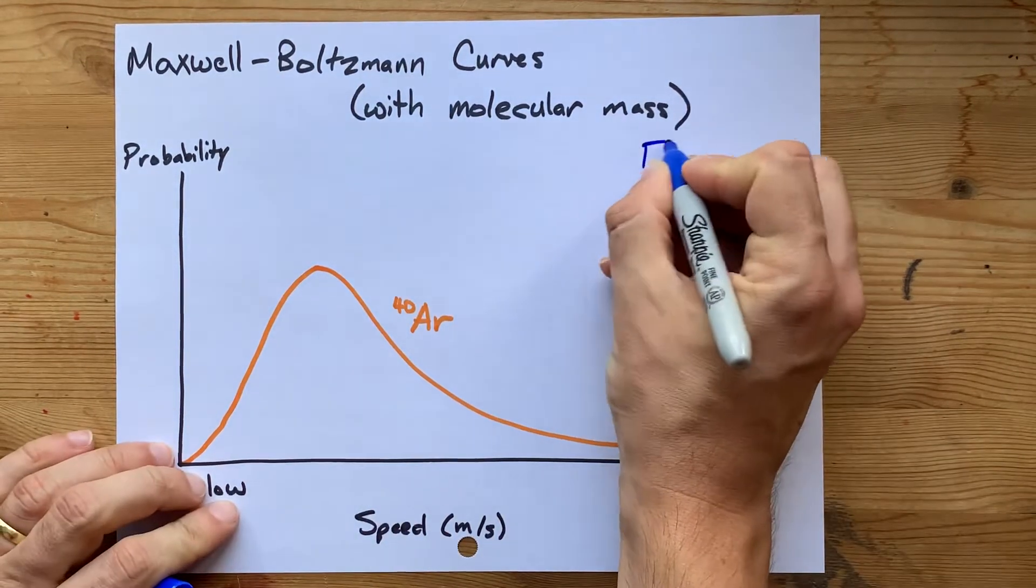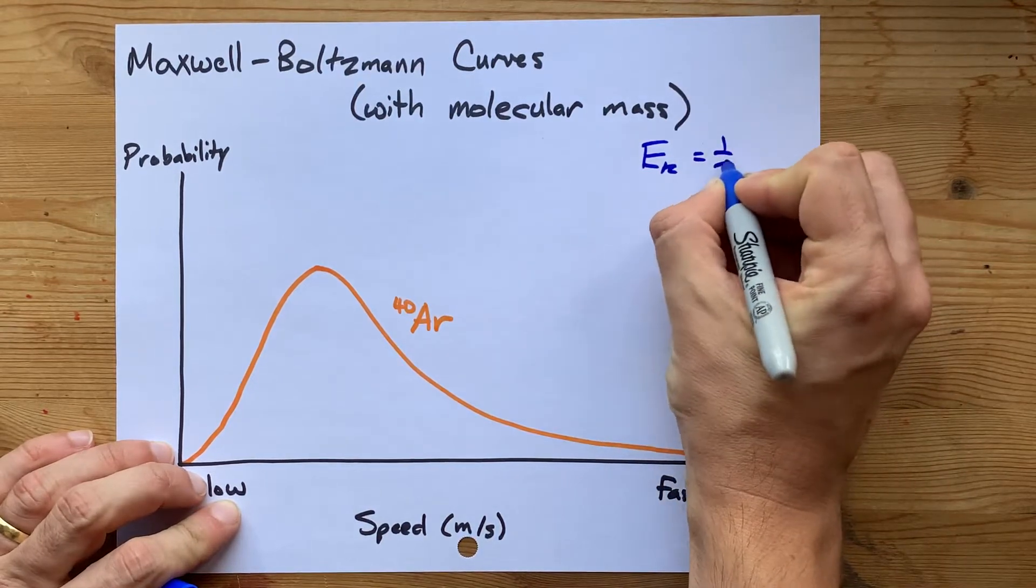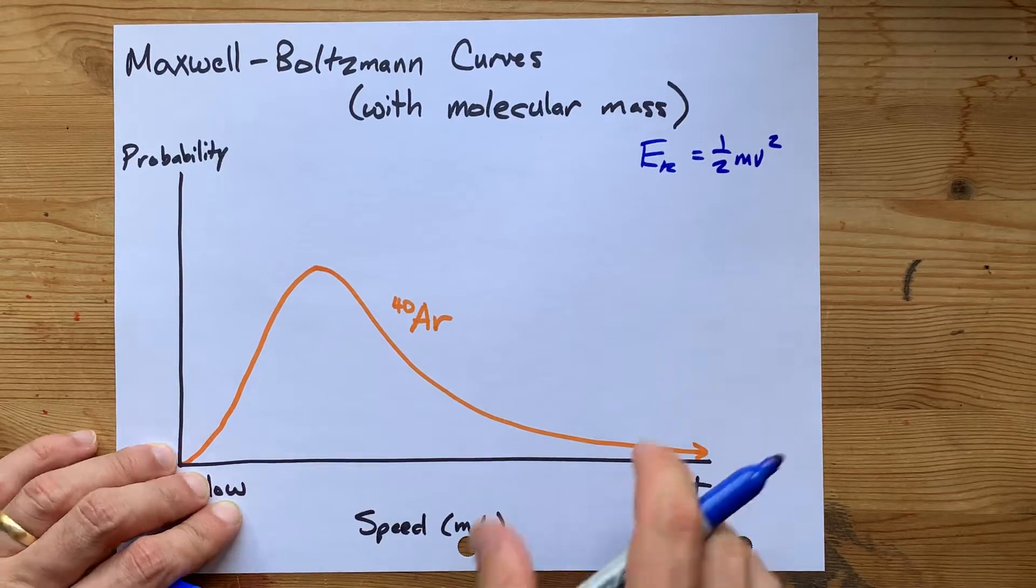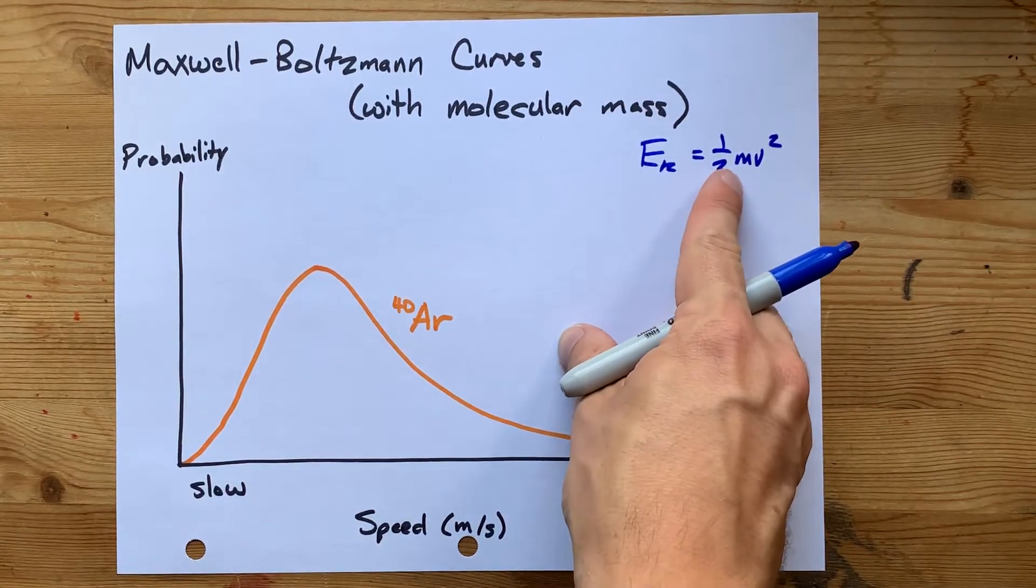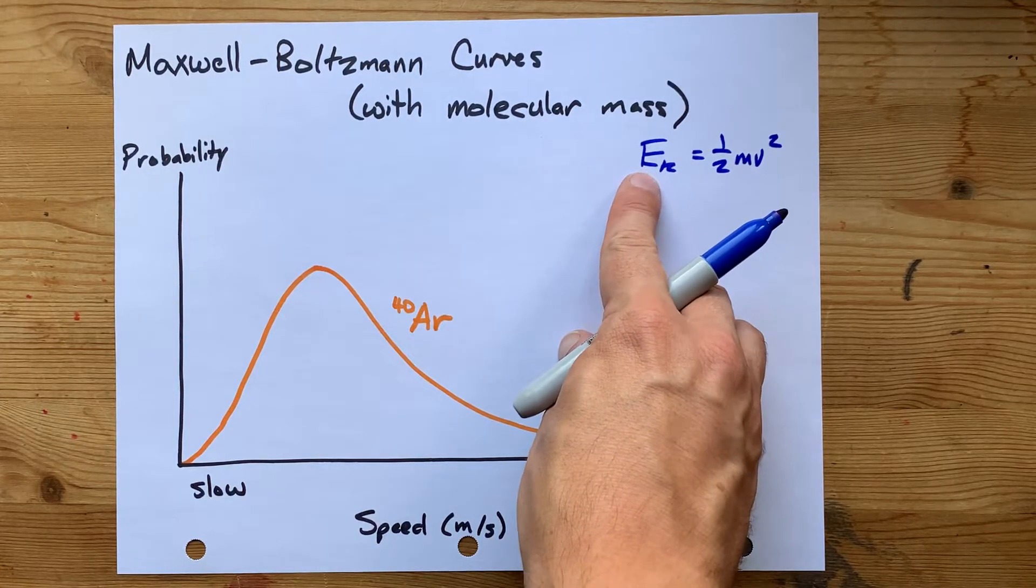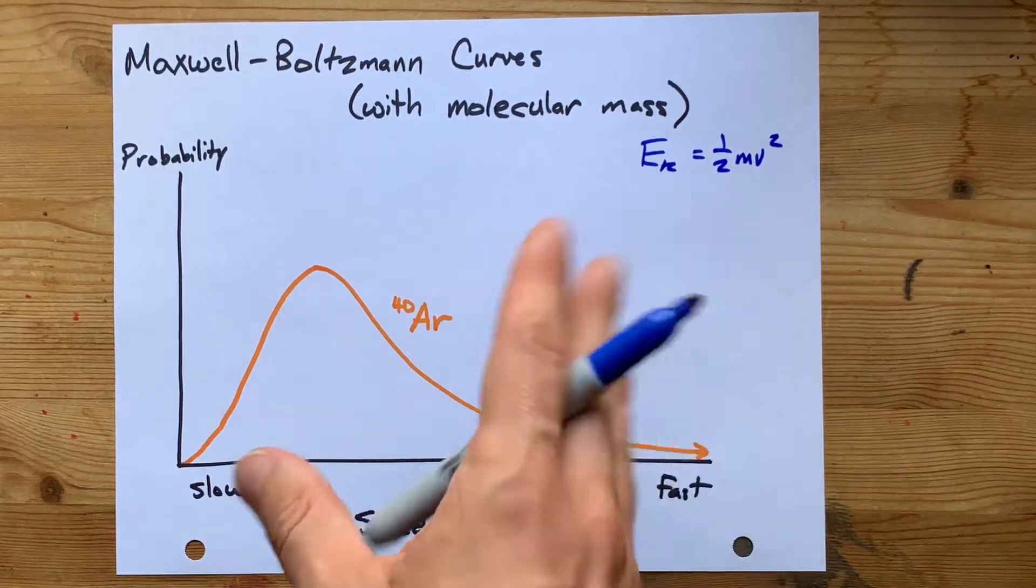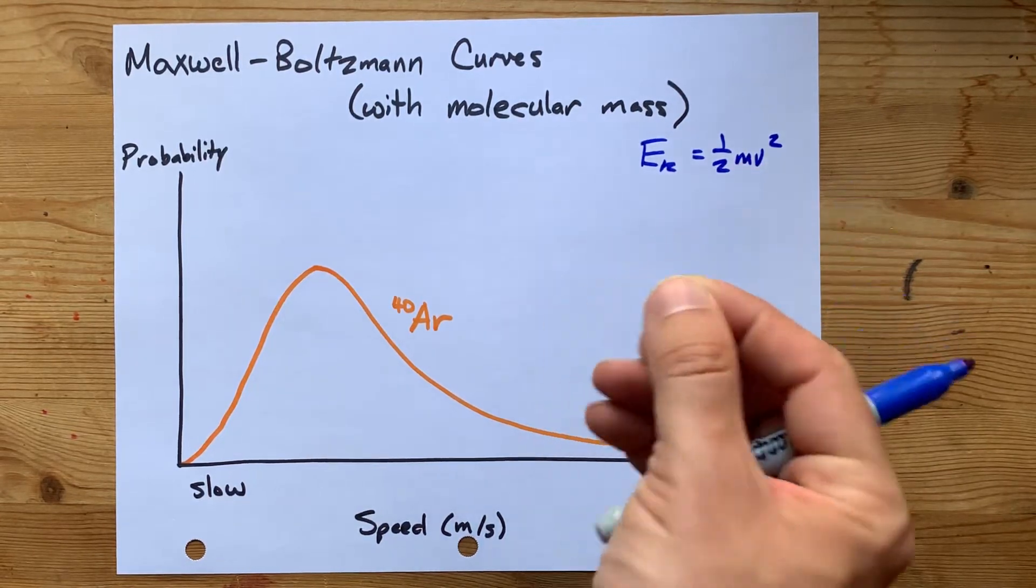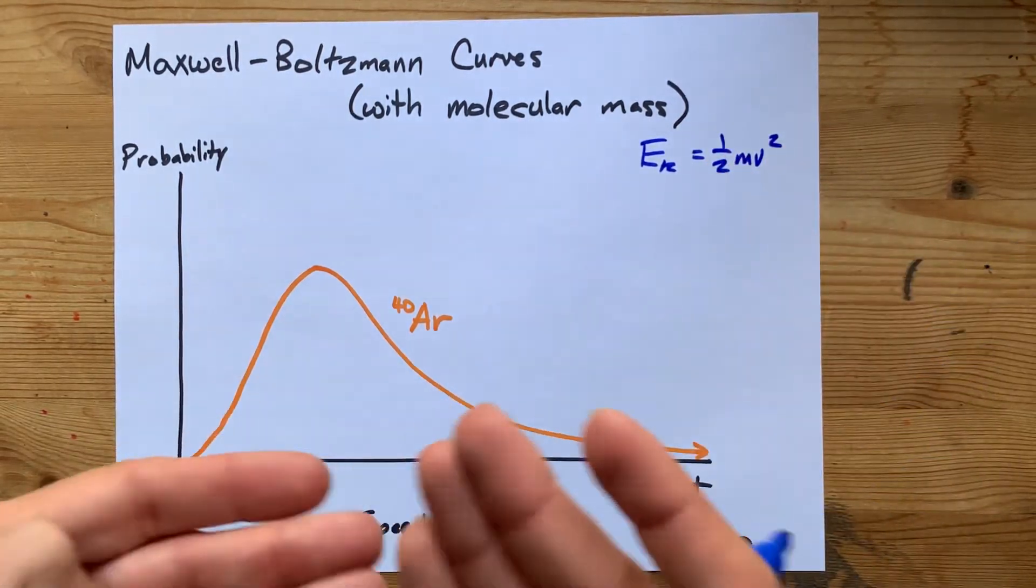Kinetic energy is one-half mv squared, for those of you who remember any physics. And so as the mass of a molecule goes up, if they have the same kinetic energy, which is how temperature is measured, it means that v, or the average speed, has to go down to compensate.